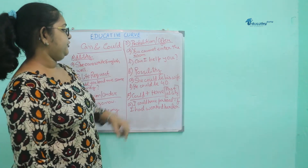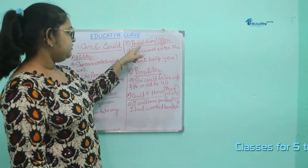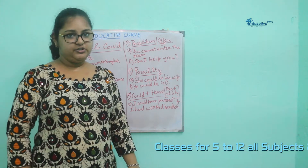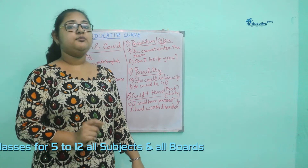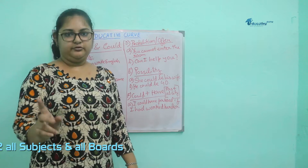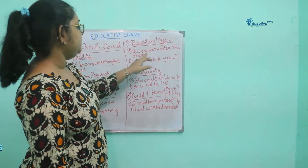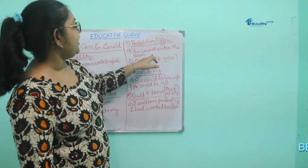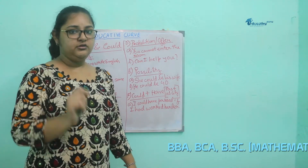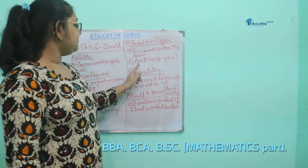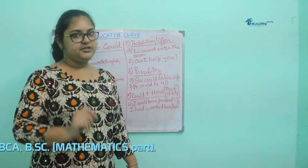Prohibition and offer: you cannot enter the room. Prohibition means something you are not supposed to do — something you are banned or barred from. So you are not permitted to enter the room. For an offer: can I help you? Here you are offering to help someone.